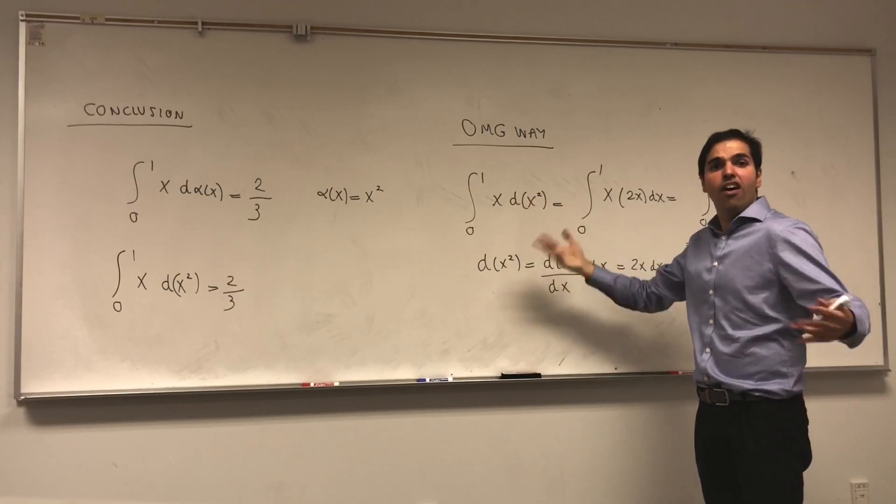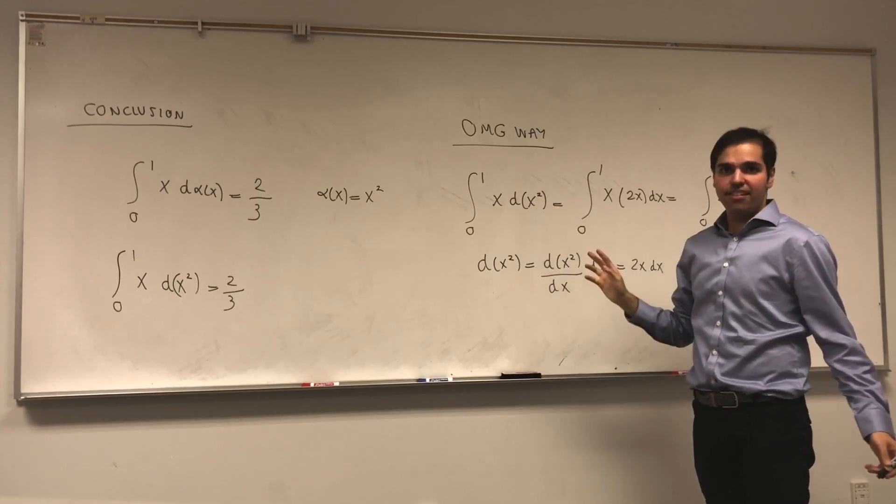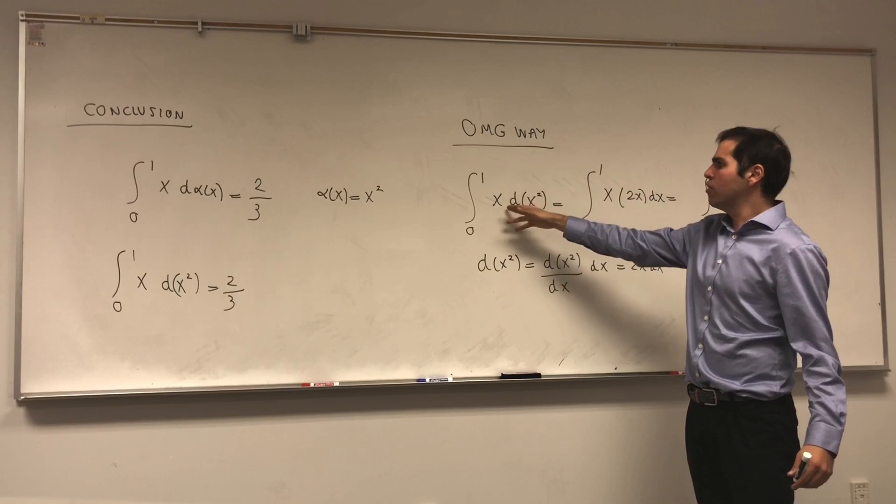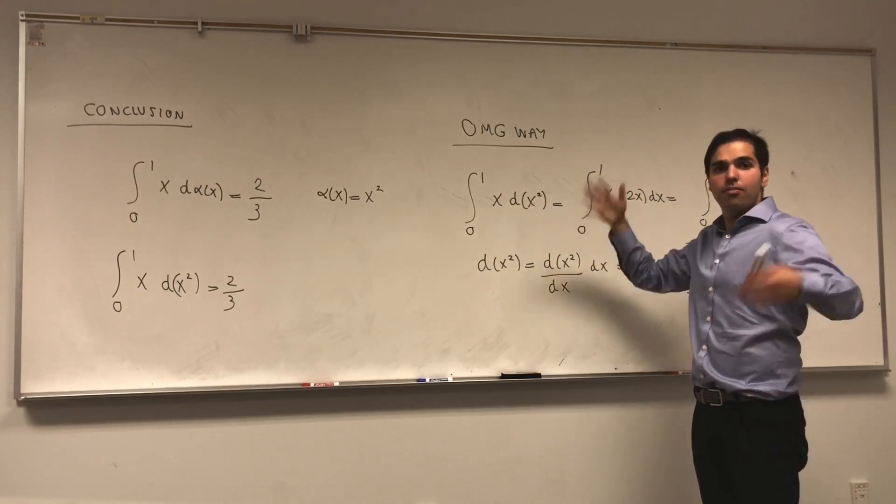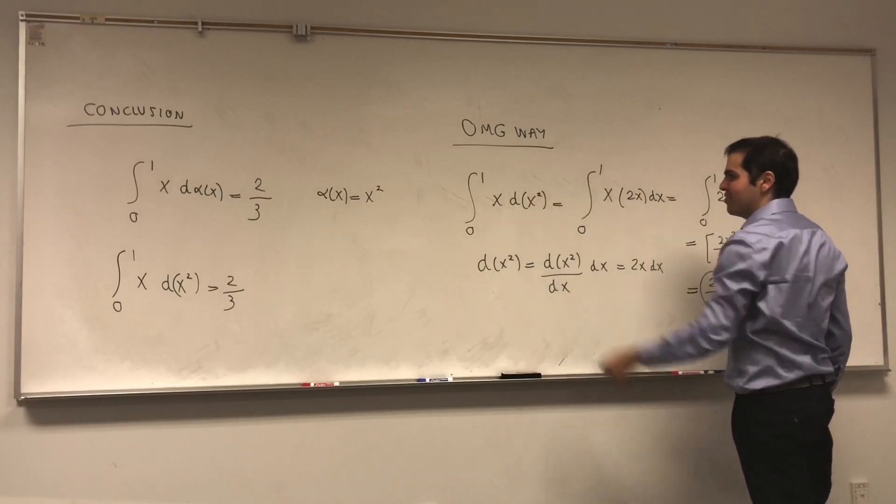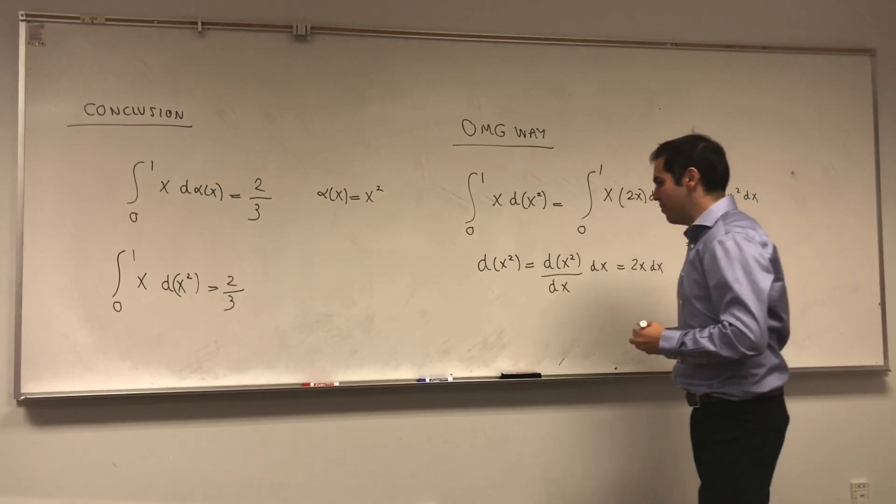And I think this is very useful also in statistics because it allows us to define the expectation of a random variable, or a function of a random variable, where this function is not necessarily smooth. If it's smooth, it becomes an integral of f prime x, but in general, you have to resort to the Stieltjes integral.